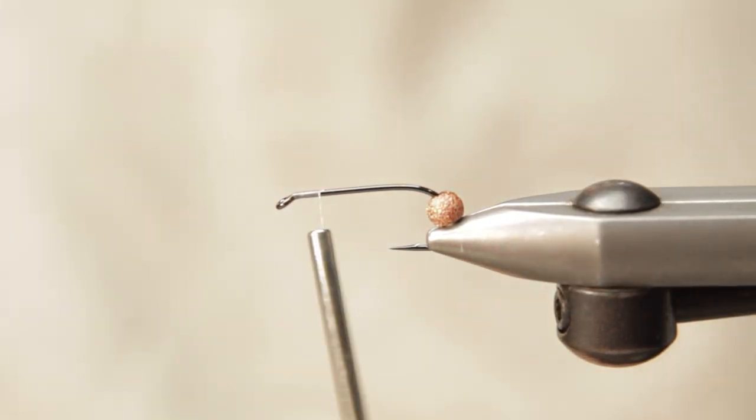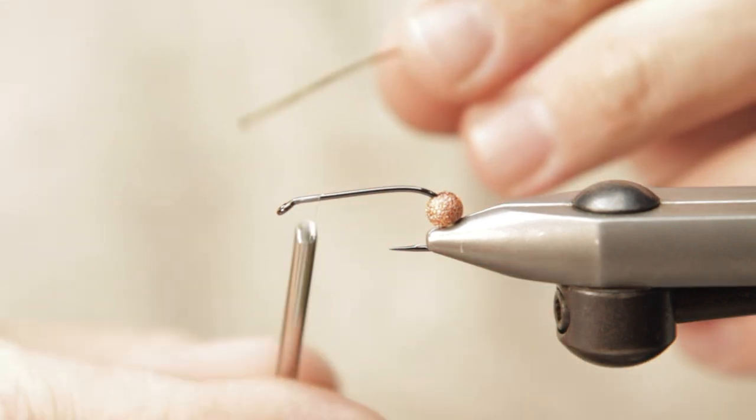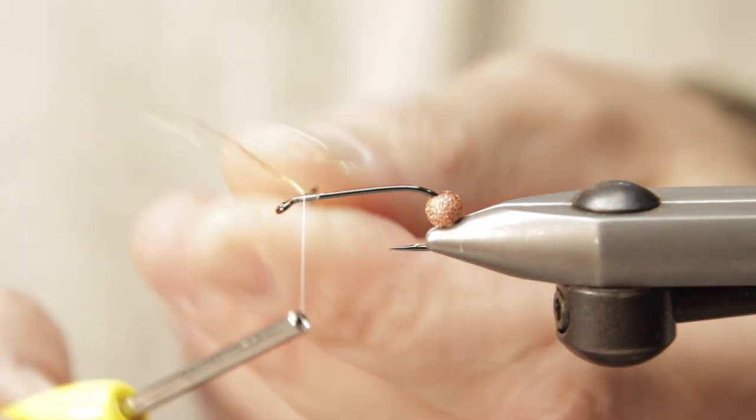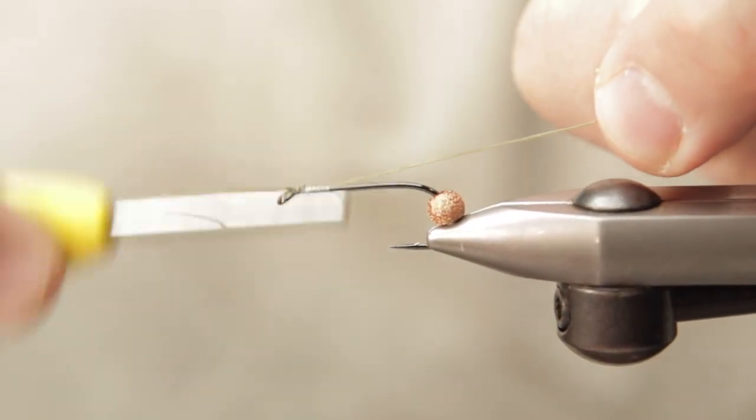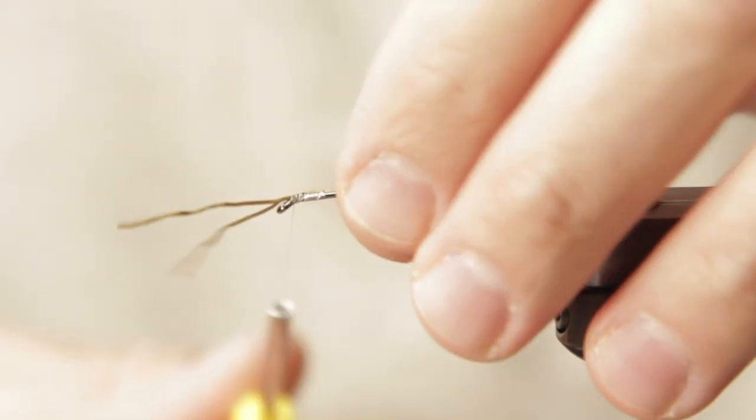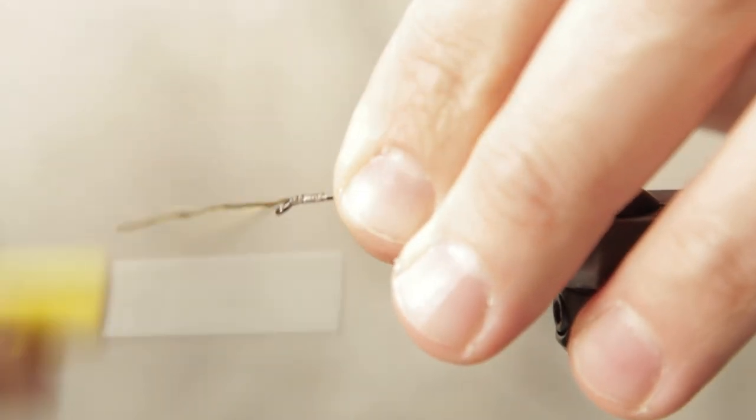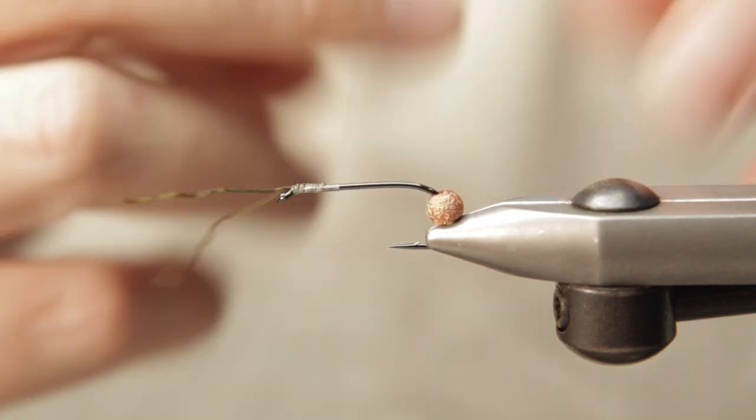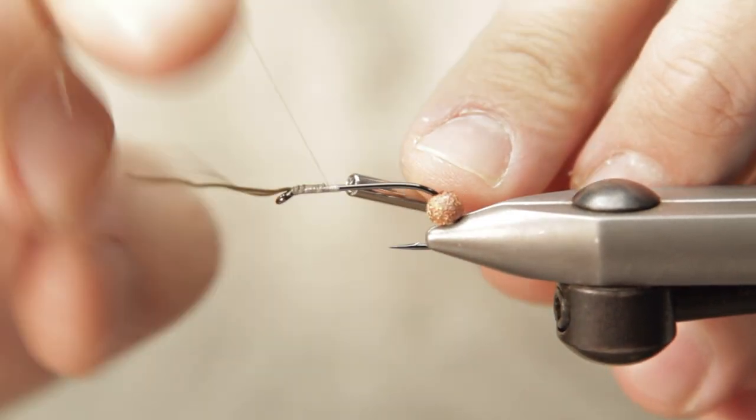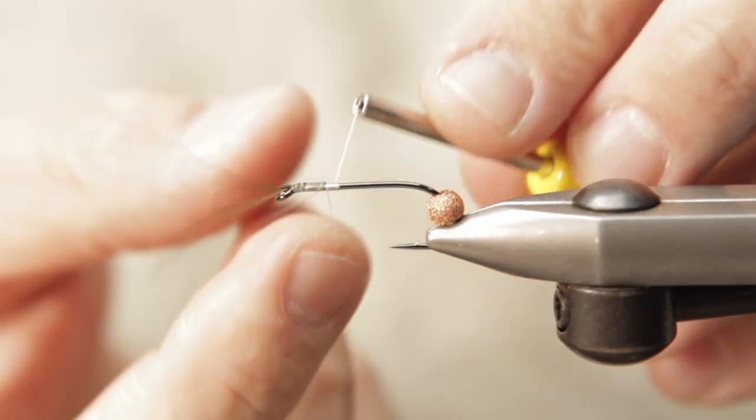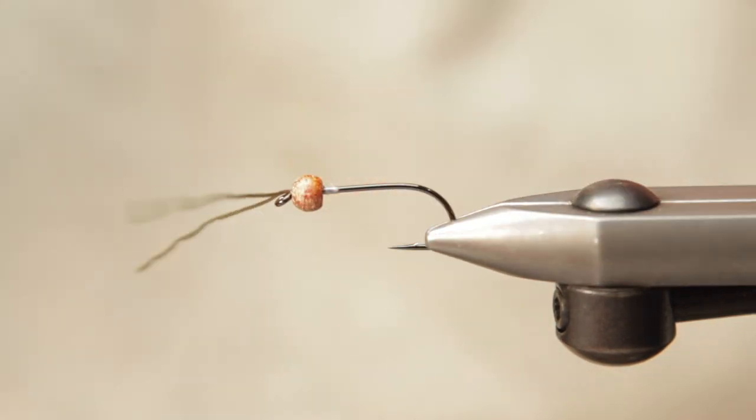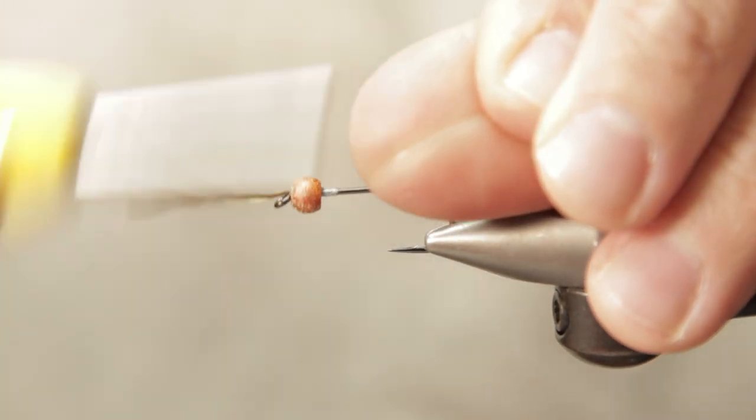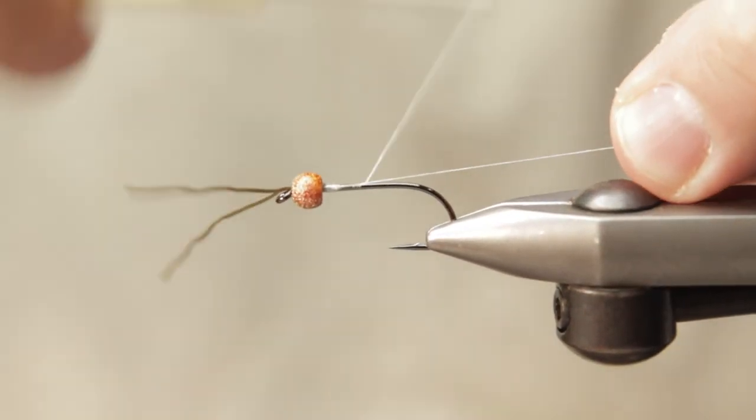We're going to start by moving the bead back, creating a slight section of touching turns of thread so that we can attach our olive sexy floss, super floss, or Lifelex. Any of your local fly shops should have them. The reason I bring it back so far is that I want to create a continuous thread base for the fly. Once we have the antenna tied in, we'll slide the bead back forward and restart our thread right where we left off.